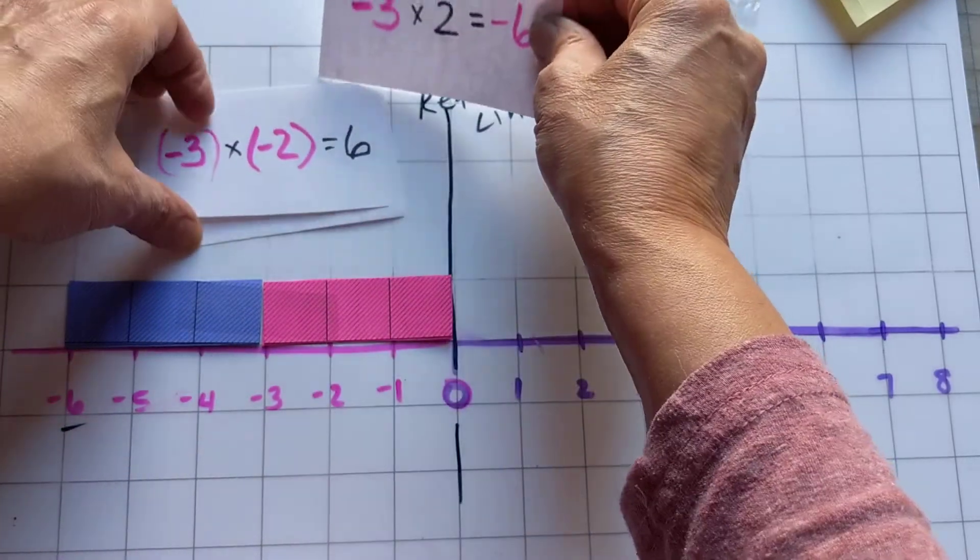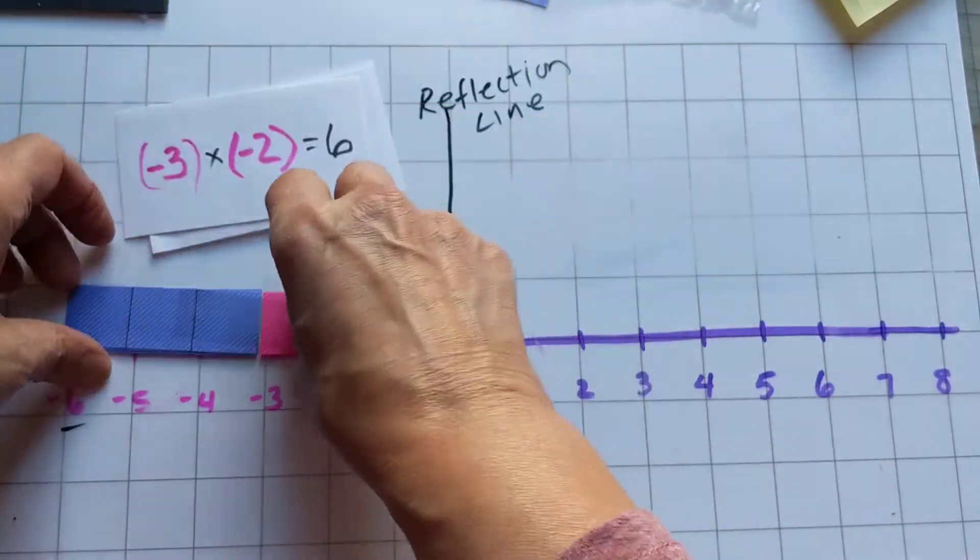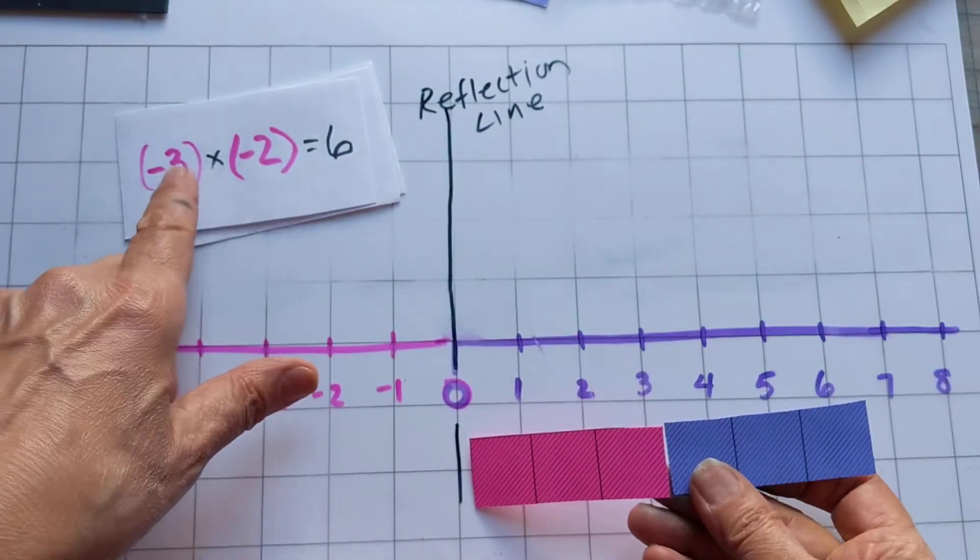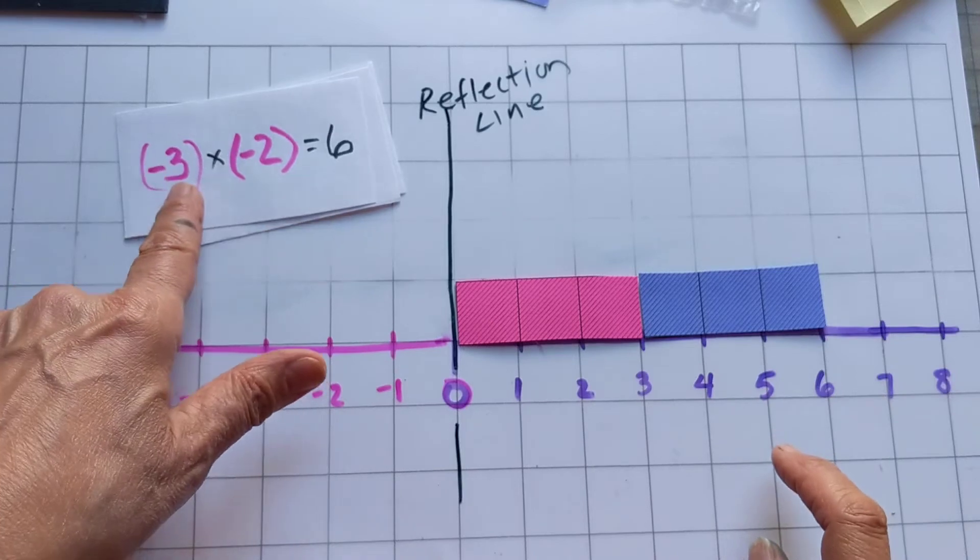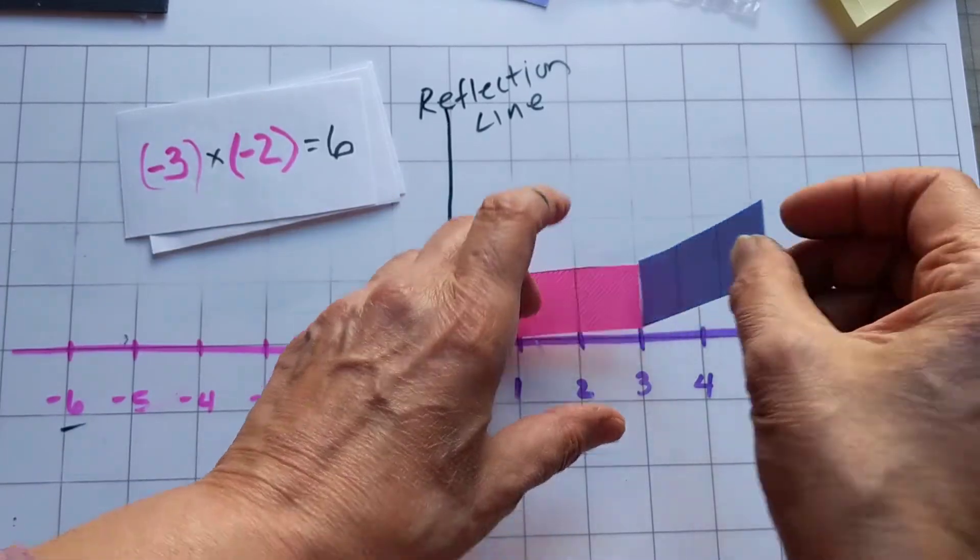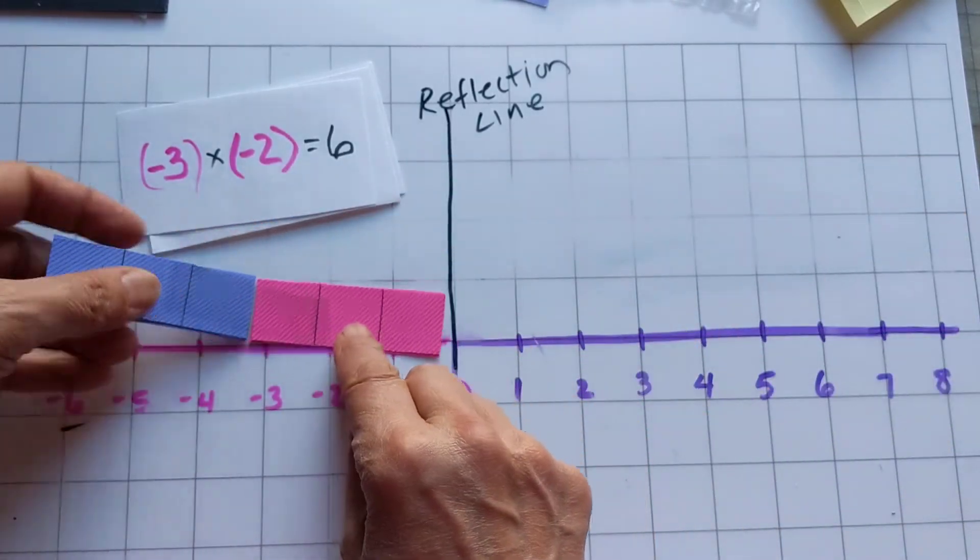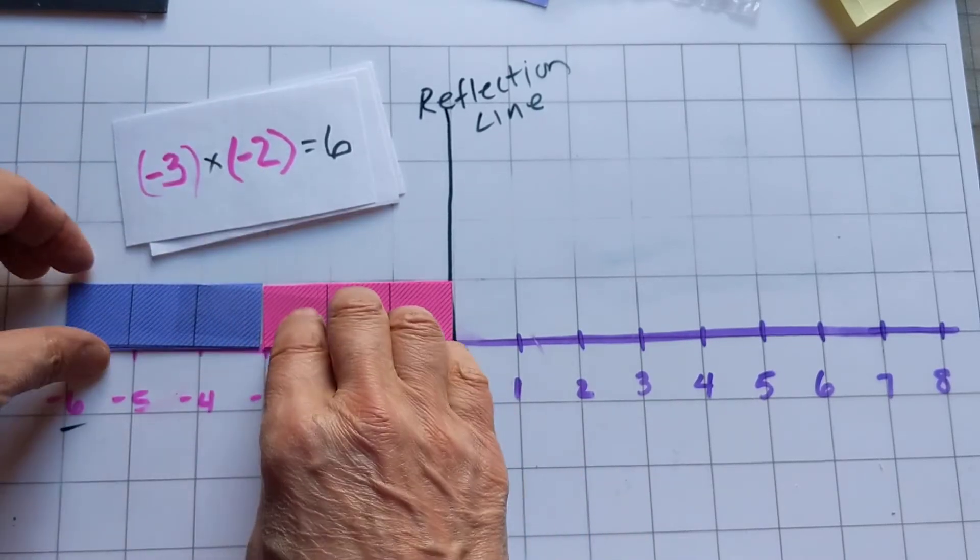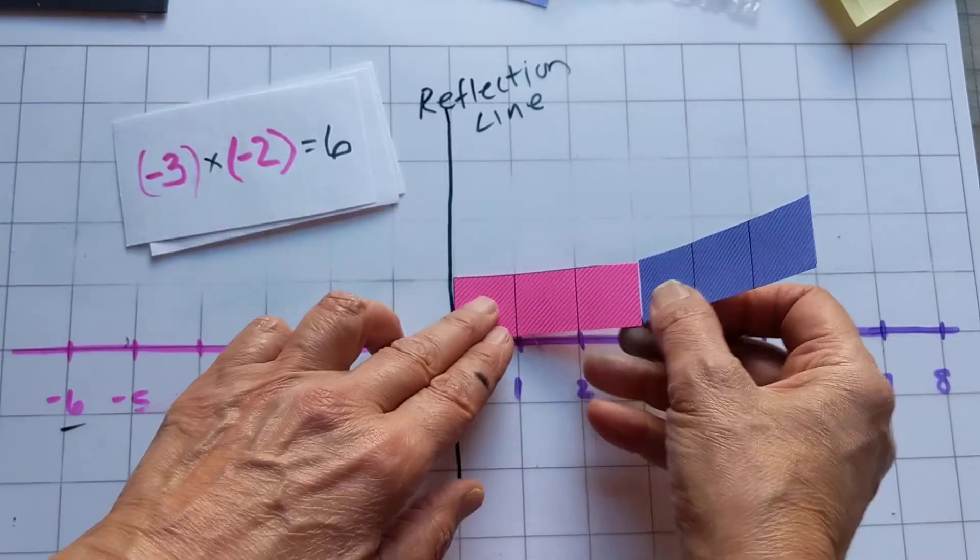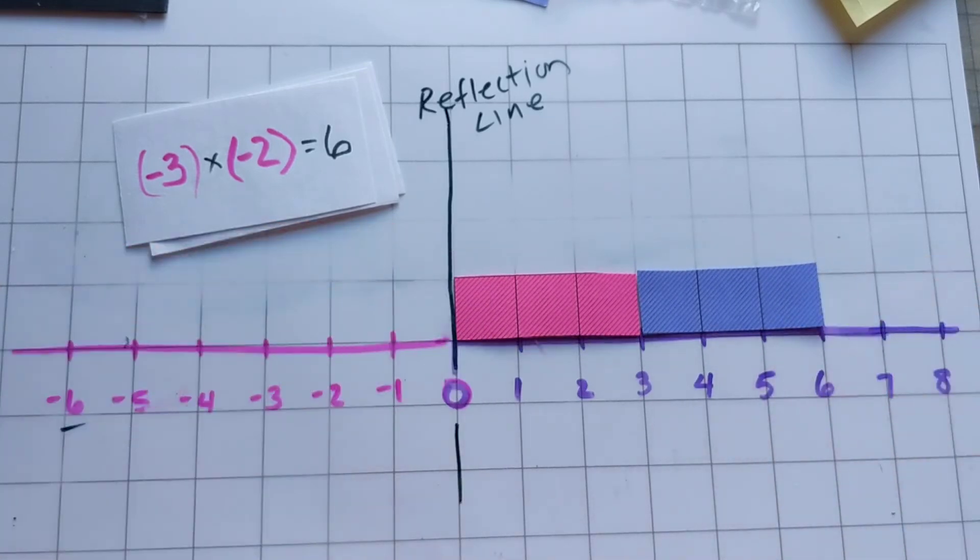Okay, but what if you've got negative three times negative two? Same thing, start off looking at three times two which is six. Because you've got the negative you want to reflect across the origin, but look, you've got a second negative so you need to reflect again and that ends you back at the six.